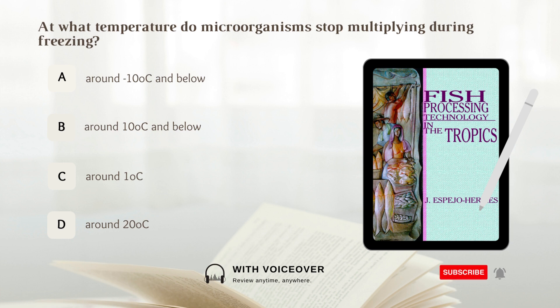At what temperature do microorganisms stop multiplying during freezing? A. Around negative 10 degrees and below. B. Around 10 degrees and below. Answer: A. Around negative 10 degrees Celsius and below.